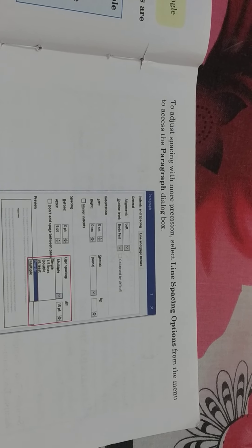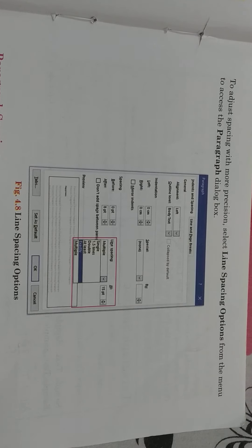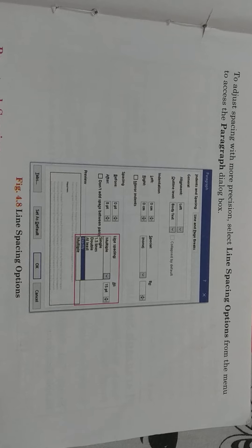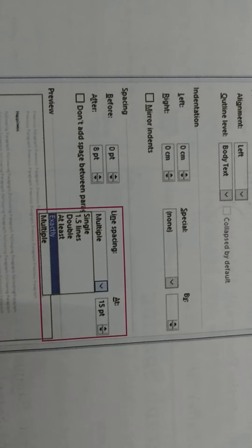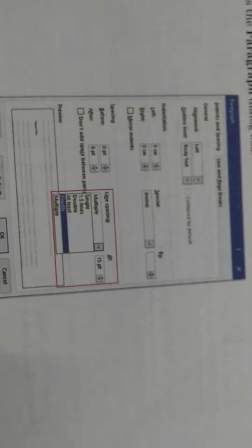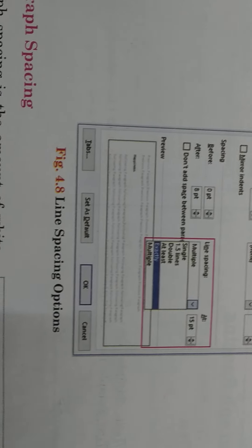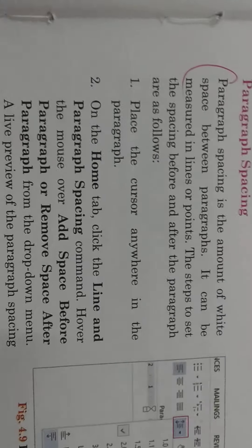Page 41: to adjust spacing with more precision, select Line Spacing Options from the menu to access the Paragraph dialog box. If you want to make other kinds of adjustments and you are not satisfied with the provided options like Single, 1.5, Double, At Least, or Exactly, then you can do it on your own. The options will appear — whichever you choose, it will be applied, and you have to finally click OK to make these changes.